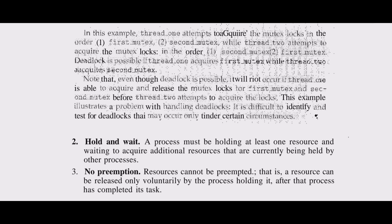Second necessary condition — Hold and Wait: A process must be holding at least one resource and waiting to acquire additional resources that are currently being held by other processes.